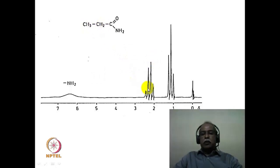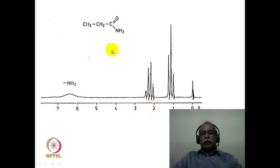Otherwise, the spectrum is fairly routine and simple. You have an ethyl group recognized by the pattern of a quartet and a triplet. The chemical shift value of the CH2 here, which is adjacent to a carbonyl functional group, is about 2.2 ppm. Anytime a CH2 or CH3 group is adjacent to a carbonyl functional group, this is the region in which it would appear in the NMR spectrum.